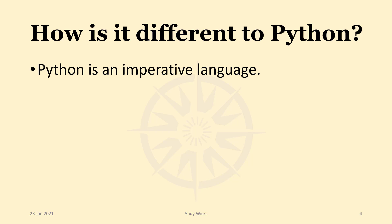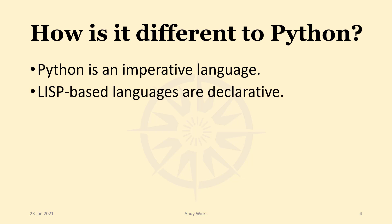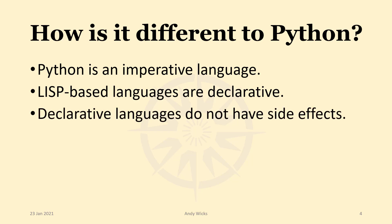Well, an imperative language is one that manipulates the computer's memory. We change the contents of various bits of memory to say this variable has now this value, stored in this location. But Lisp languages are declarative — there are no variables to be held, just a series of functions. Declarative languages do not have side effects.